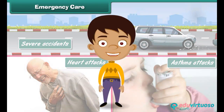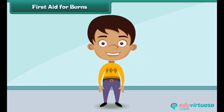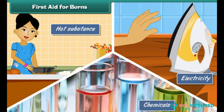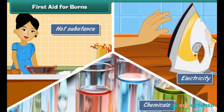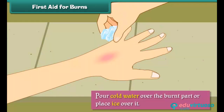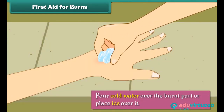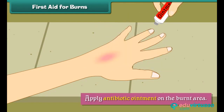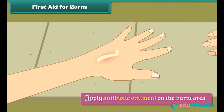Let us now learn some home remedies that can be used to treat small injuries. First aid for burns: a burn is an injury to the skin resulting from direct contact with an extremely hot substance, electricity, or chemicals. When a person suffers burn injuries, we should pour cold water over the burnt part or place ice over it, wipe with a dry cloth, and apply antibiotic ointment on the burnt area.